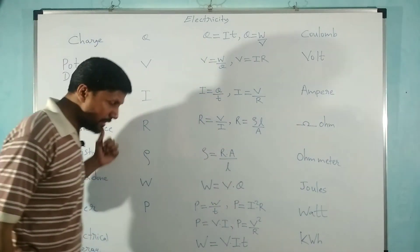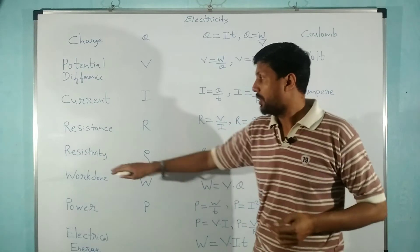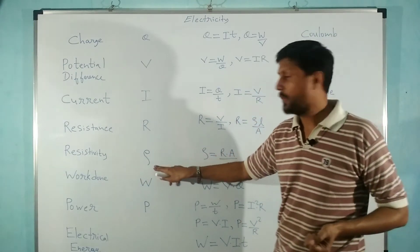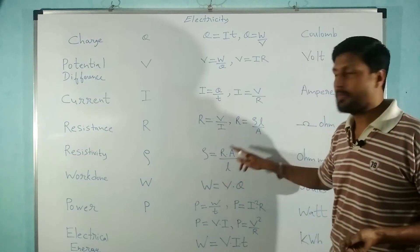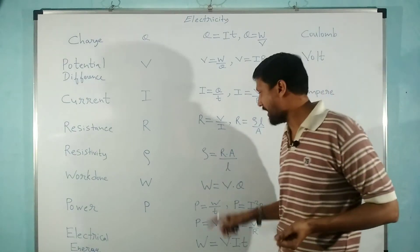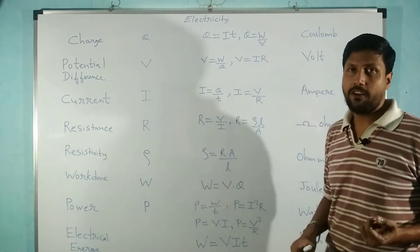Resistivity's symbol is rho (ρ). The formula is ρ equals R times A upon L, where R is resistance, A is area of cross-section, and L is length of the conductor.